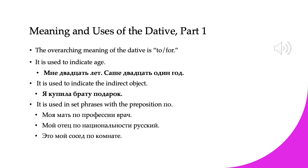We also use the dative to indicate the indirect object. The indirect object is normally the person that you are doing the action for or to. For example, я купила брату подарок — I bought my brother a present. Подарок is the direct object, the direct recipient of the action of the verb, and it is in the accusative case. Брату is the indirect object, the indirect recipient of the action of the verb, and it is in the dative case.